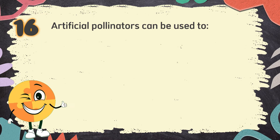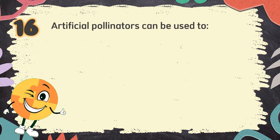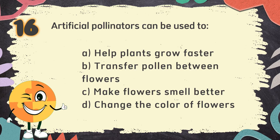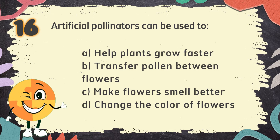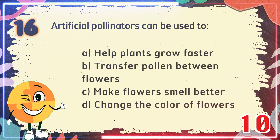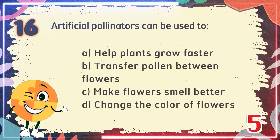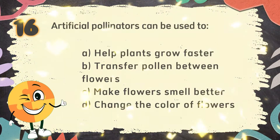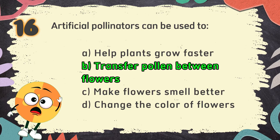Number 16: Artificial pollinators can be used to — The choices are: A. Help plants grow faster, B. Transfer pollen between flowers, C. Make flowers smell better, D. Change the color of flowers. The correct answer is B. Transfer pollen between flowers.